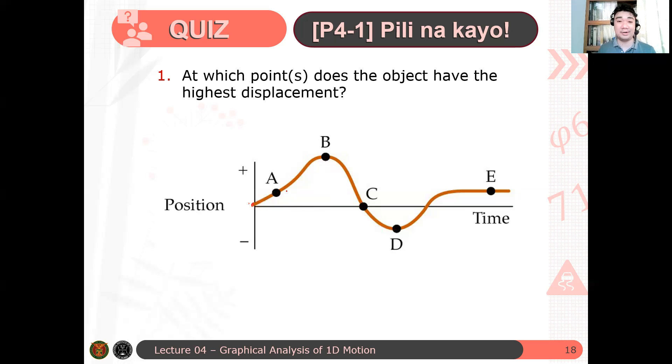There's a question in the exam before na maraming nagkamali dahil nakalimutan nila ito. Dapat ay from x-axis correct. So let's say here, this is the distance, this is the distance. Walang distance, therefore it returned to the origin. This is that distance and this is that distance. And therefore, the answer is B. Kasi siya yung pinakamalayo dun sa x-axis, sa time axis mo. Questions? May tanong ba?